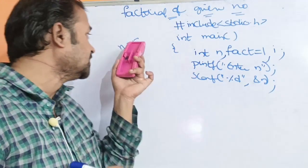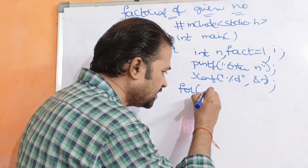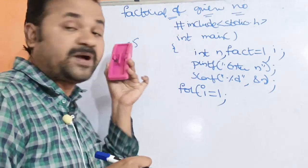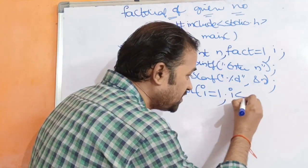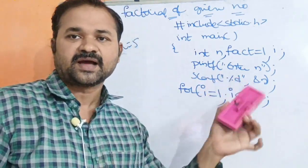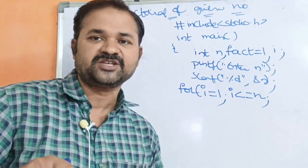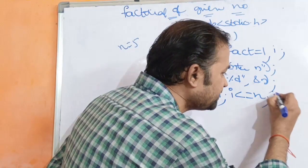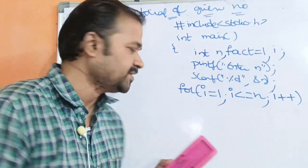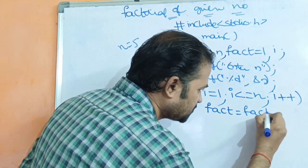Suppose n lo 5 enter chesthe, 1 nunchi start chesi n varaku repeat chesthamu. So for loop use cheyali - 1 nunchi start cheyali, a number varaku repeat cheyali - i less than or equal to n condition pettali, because a number varaku multiply cheyali. Every time i increment cheyali - i plus plus. Simple ga, fact is equal to fact into i - i value tho fact ni multiply cheyali.